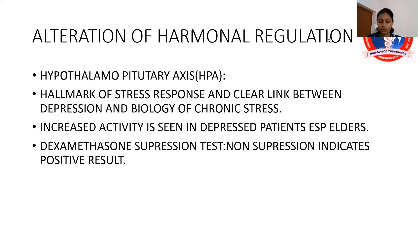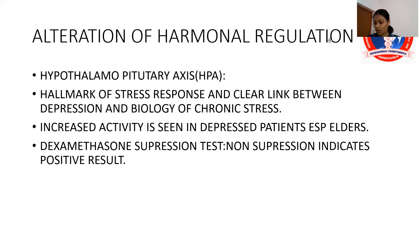Hypersecretion of cortisol plus dexamethasone non-suppression suggests HPA axis dysfunction. Dexamethasone non-suppression is associated with history of early trauma, resulting in reduction in synthesis of glucocorticoid receptors, hippocampal cell death, or chronic hypersecretion of cortisol-releasing hormone. It is also seen in malnutrition, dementia, and approximately 56% of cases of hypothyroidism. Depression also shows non-suppression on the dexamethasone test.